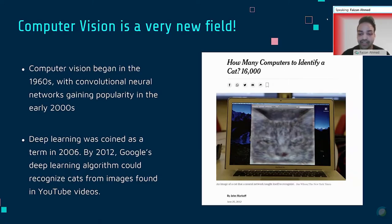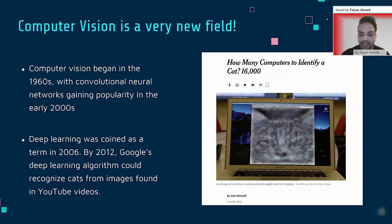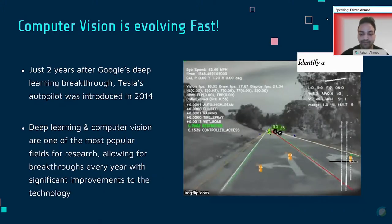It actually took 16,000 computers back then to accomplish this, whereas now you can achieve the same result on your phone. So what took Google 16,000 computers to do, you can replicate today on your phone, which I'll show towards the end of this meeting.